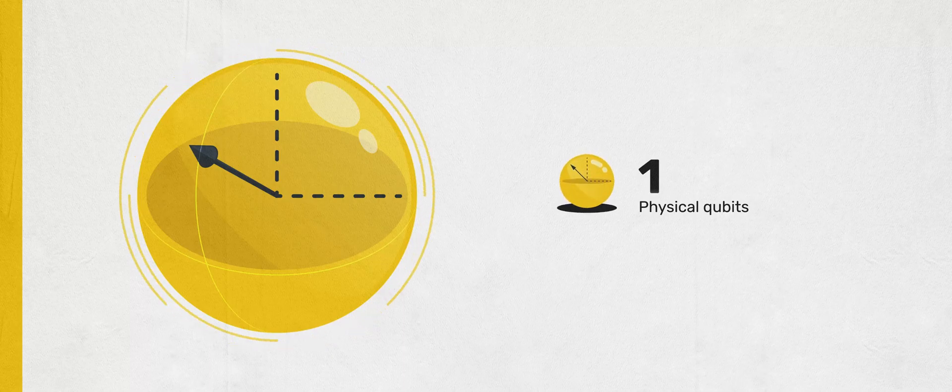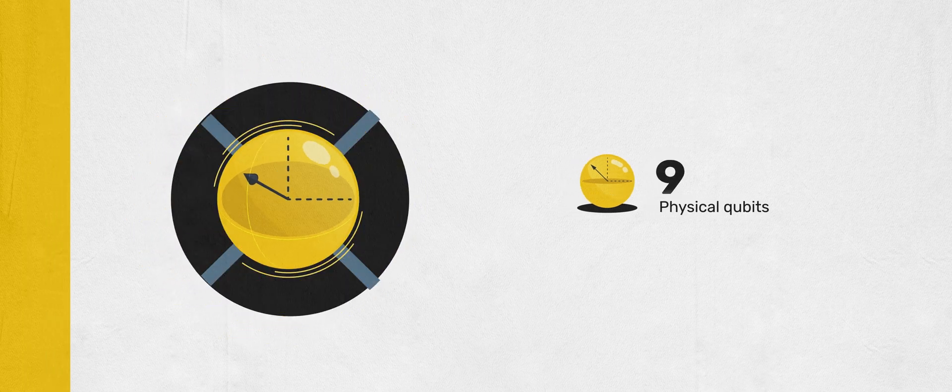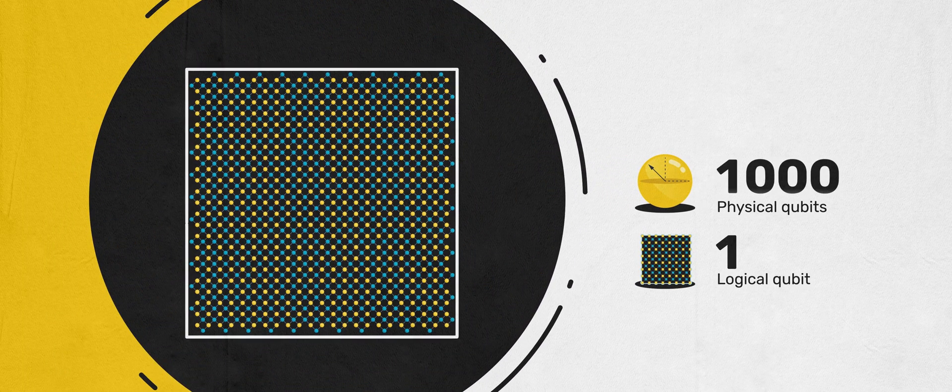About a thousand individual qubits are needed to achieve perfection, to create one error-free logical qubit. It's like needing a whole orchestra to play one flawless note.